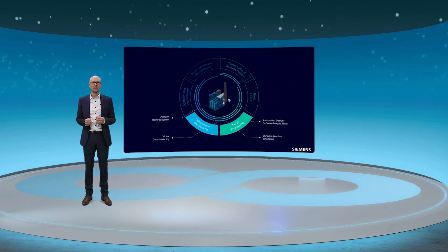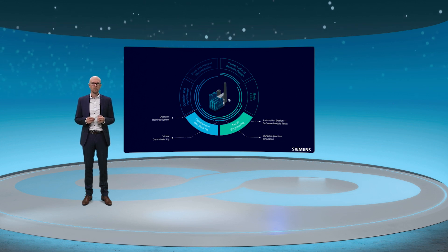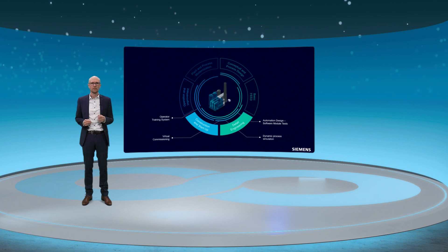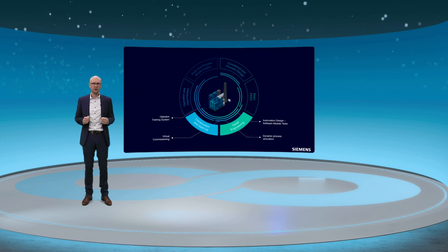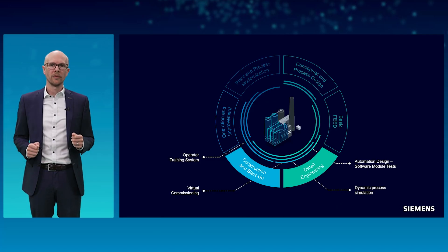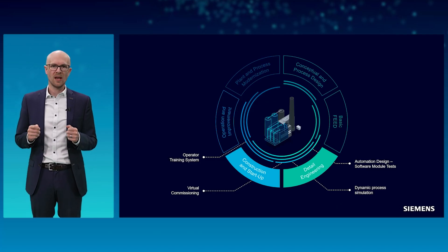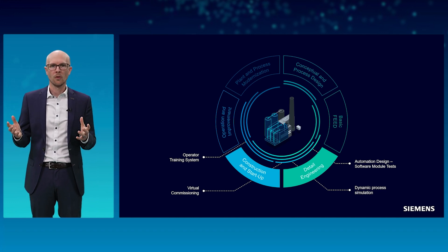Let's move on to detail engineering, construction and startup. Once the optimum design has been found, the next step is automation. To test the created automation programs and to further improve engineering quality, a virtual commissioning is executed. For this purpose, SIMIT simulates the behavior of the actuators, sensors — for example drives, motors or encoders — and of the process.